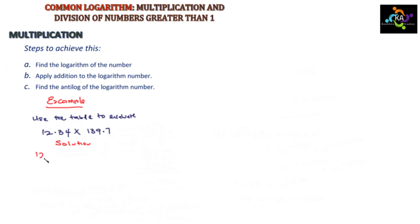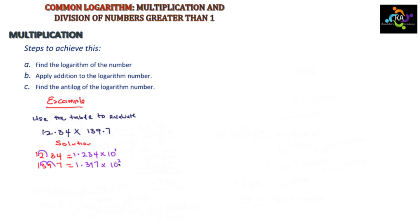For 12.34, we shift the decimal point back once, giving 1.234 × 10 to the power 1. For 139.7, we shift the decimal point back two places, giving 1.397 × 10 to the power 2.